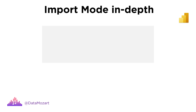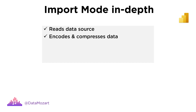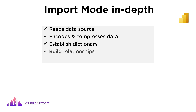Now, let me explain in more detail what VertiPaq does in the background to boost performance of our Power BI reports. When we choose Import mode for our Power BI tables, VertiPaq will perform the following actions: first, it will read the data source and transform the data into a columnar structure; then encode and compress data within each column; after that, establish a dictionary and index for each column; then prepare and establish relationships; and finally, compute all calculated columns and calculated tables and compress them.